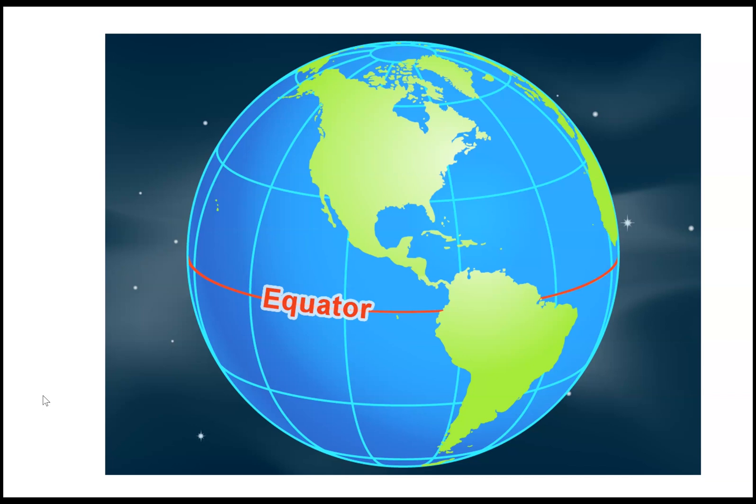What have we learned about freshwater habitat? We talked about it yesterday. Why is it called freshwater? Because there's no salt in it. Some plants that live in freshwater habitats include cattails and water lilies, and animals include frogs, ducks, and fish.